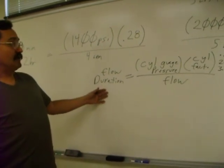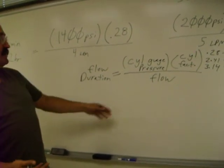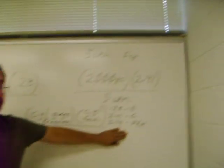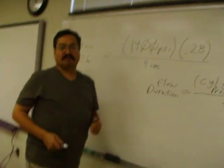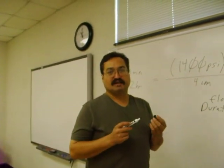Calculating flow duration is as simple as that. Just remember this formula, and remember a few of the conversion factors, and you're good to go, and your patients will always have enough air and oxygen to breathe. Thank you, and have a good day.